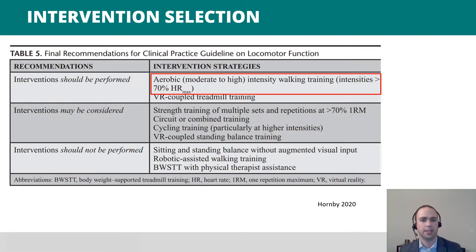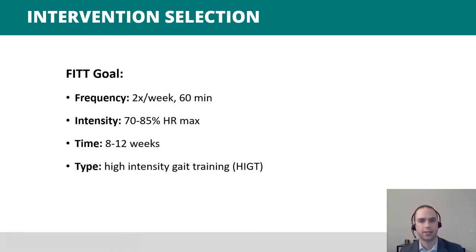We aimed to implement the CPG's first action statement, specifically providing gait training at cardiovascular intensities above 70% of max heart rate. Our plan of care was to see Mr. EC twice a week for one-hour-long sessions, expecting to work with him for 8 to 12 weeks pending his response to therapy. Our visit frequency was limited by our clinic schedule availability, and we targeted intensity to be between 70% and 85% of age-predicted max heart rate, wanting to practice walking only to maximize specificity and repetition.